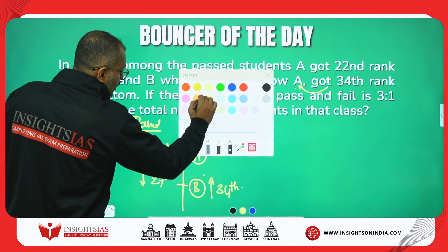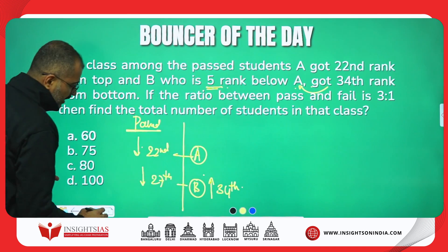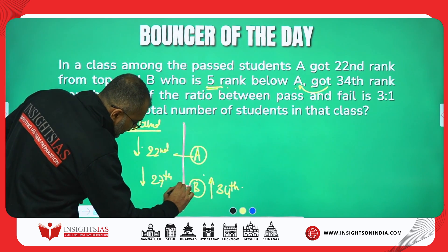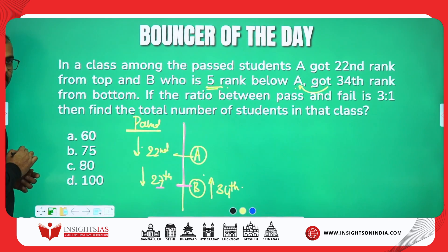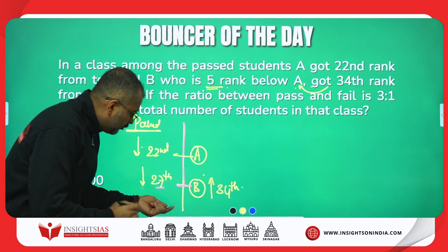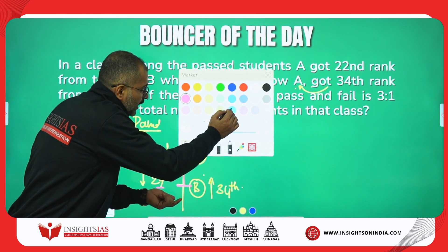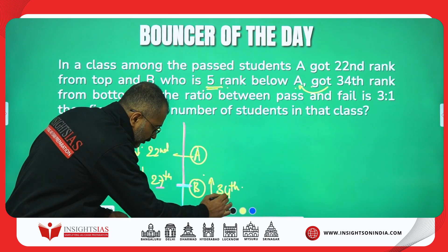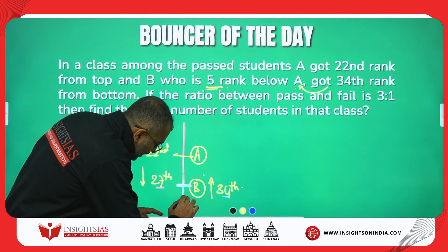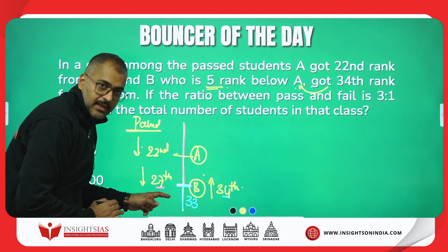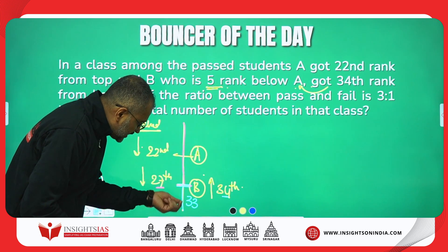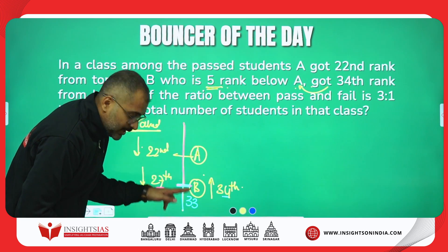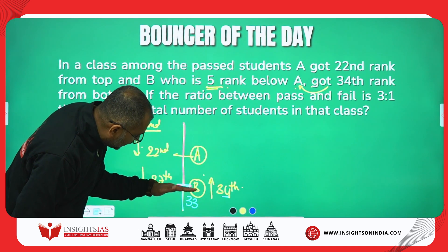From the top including B, there are 27 people — agree, 27 people. When you are counting from the last, the position of B is 34th, which means before B how many people are there? 33. If B's position is 34th from the last, before B there are 33 people.